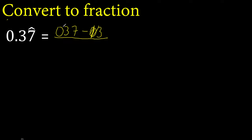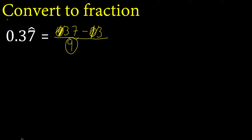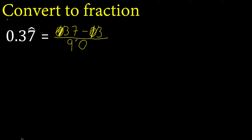Eliminate the 0 on this side. After the point, there is one number under the symbol, therefore 9 — always 9 for one number. After the point, there is one number outside the symbol, therefore 0 — always 0 for one number, one time.